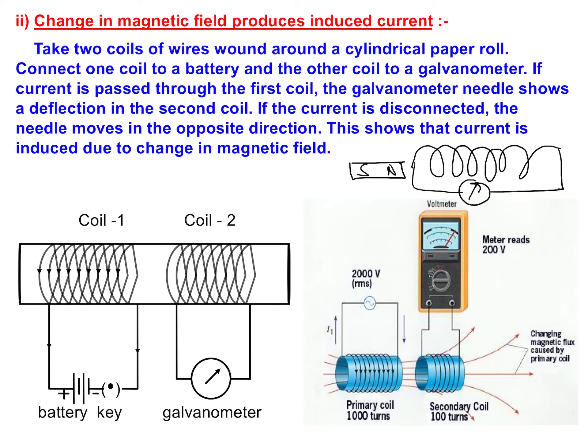This is another way to state the same thing — it is not different from that. Now, we take two coils of wires wound around a cylindrical paper roll.